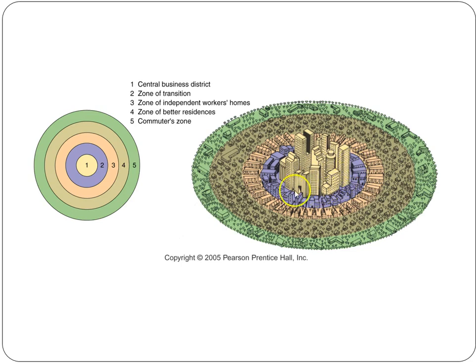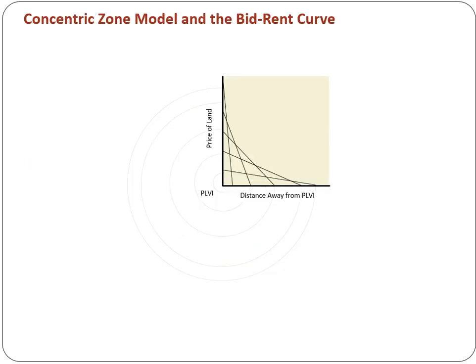The most important feature is a positive correlation between socioeconomic status and distance from the CBD — as you move away, wealth increases. More affluent households live at greater distances from the central city. This also connects to the bid-rent curve: as you move away from the city, land is cheaper, so the wealthy can build bigger houses on cheaper land further out.